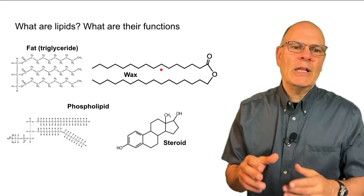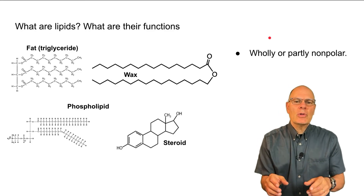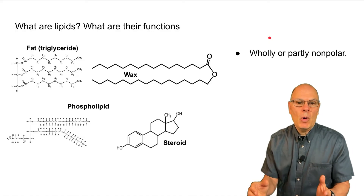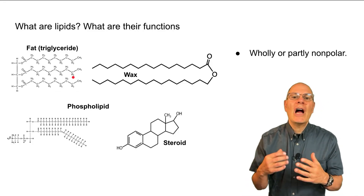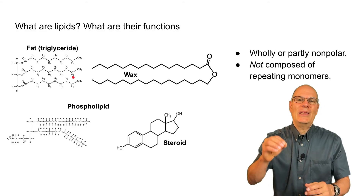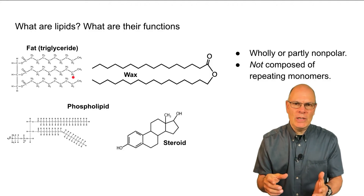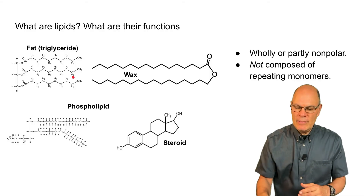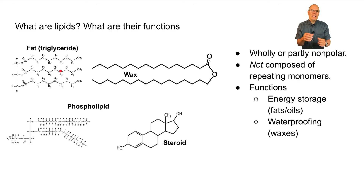Now let's move on to lipids. What are their functions? Here we have four different lipids. What makes a lipid a lipid? First, lipids are molecules that are wholly or partly non-polar — like these hydrocarbons here, which are completely non-polar, don't dissolve in water, and are hydrophobic. Unlike carbohydrates, proteins, and nucleic acids, lipids are not composed of repeating monomers. They might have subunits, but not repeated hundreds of times. Here we have a fat — a triglyceride — used for energy storage in both animals and plants. In animals those fats are usually solid; in plants they're usually liquid and we call them oils.